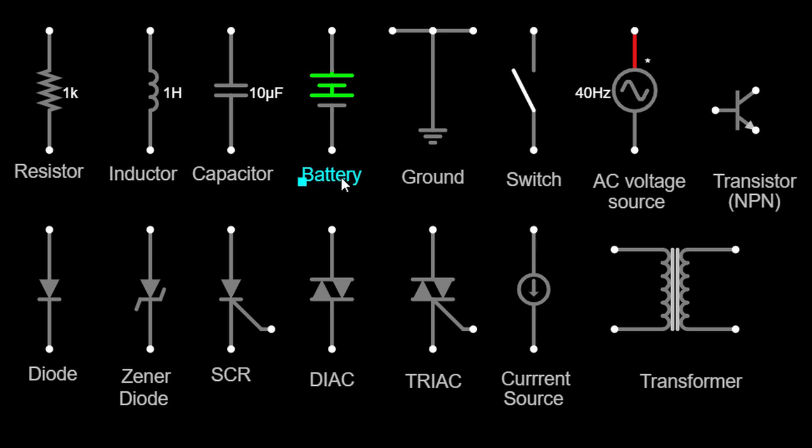Now let's move on to the battery symbol. It represents a power source in a circuit. Batteries provide a steady voltage to power electronic devices. The positive terminal is typically marked with a longer line or a plus sign, while the negative terminal is represented by a shorter line or a minus sign.